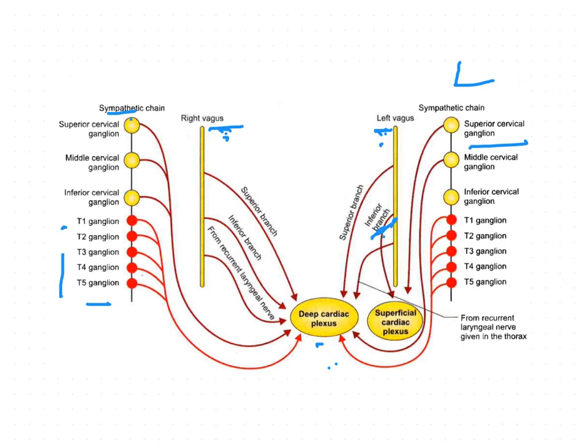The deep cardiac plexus is formed by all the cardiac branches derived from the cervical and upper thoracic ganglia of the sympathetic chain, and the cardiac branches of the vagus and recurrent laryngeal nerves. On the right side, contributions come from the superior cervical, middle cervical, and inferior cervical ganglia, as well as T1 to T5 thoracic ganglia.